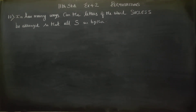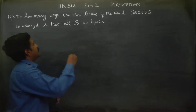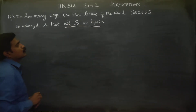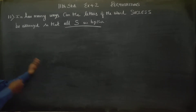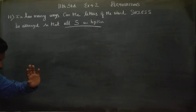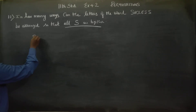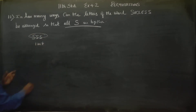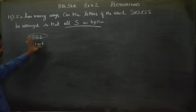For 11th standard students, this is Exercise 4.2, sum number 12. In how many ways can the letters of the word SUCCESS be arranged so that all S's are together? We rearrange the alphabets such that all three S's are continuous — we bind them as one unit, one bundle. Triple S will be treated as a single unit.